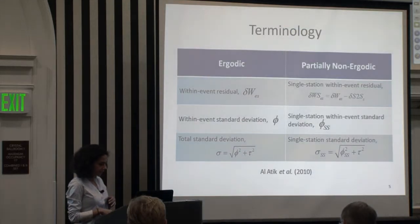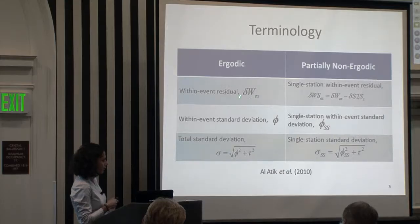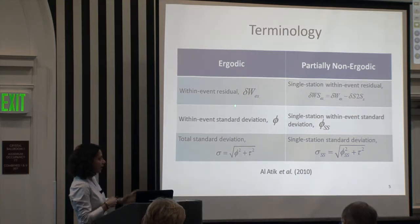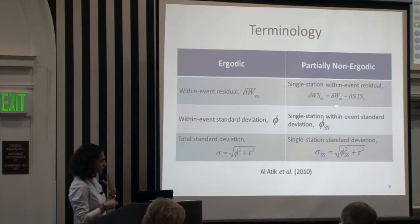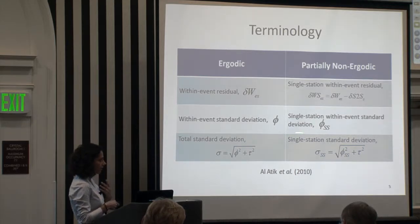This summarizes the terminology used. From the different models I'm analyzing, I have their within-event residuals. I estimate the site-to-site term — which does not include the event term. I take that out and I end up with single-station within-event residuals and then single-station phi. This is all what I'm talking about today — I'm not talking about DAO.